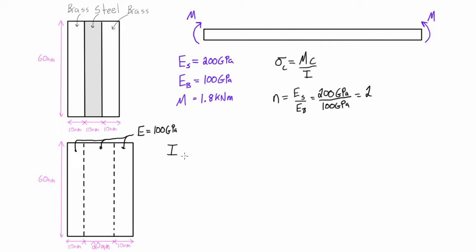So we are going to need our moment of inertia for the transformed section, and this is going to be equal to 1/12 base height cubed because it is a rectangle. So we just get 1/12 times 40 millimeters times 60 millimeters cubed, and this gives us a final moment of inertia of 0.72 times 10 to the 6 millimeters to the power of 4, or 0.72 times 10 to the negative 6 meters to the power of 4, which will give us the right units when we plug into this expression.